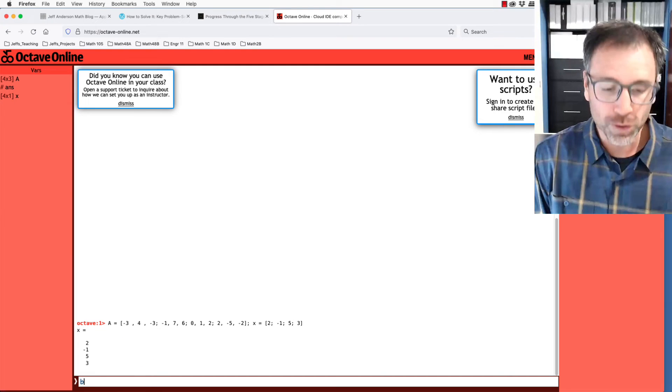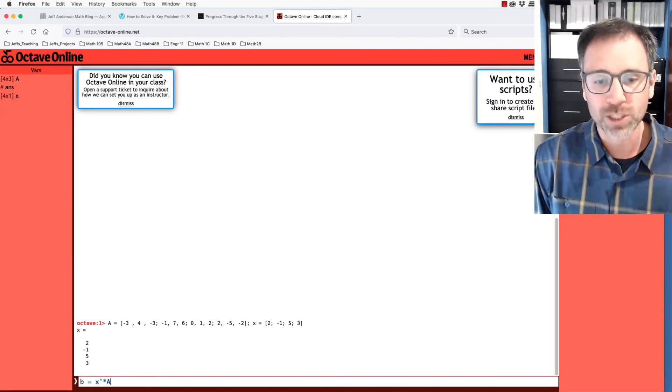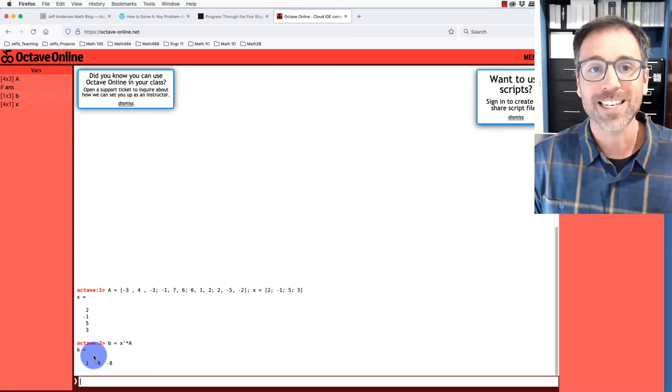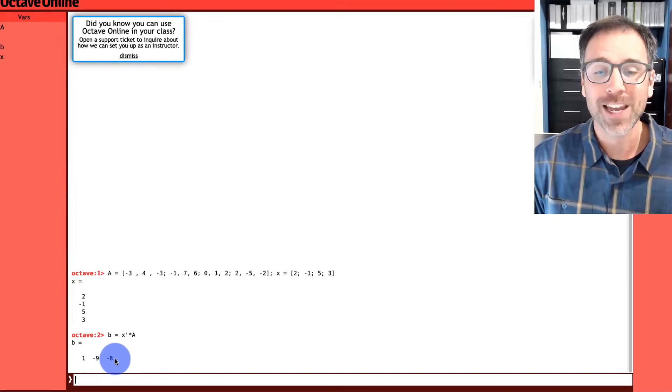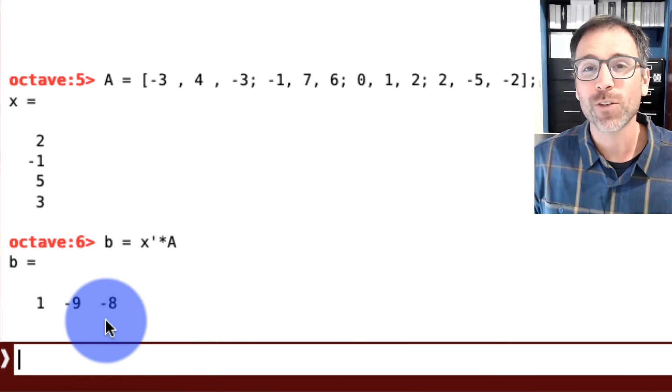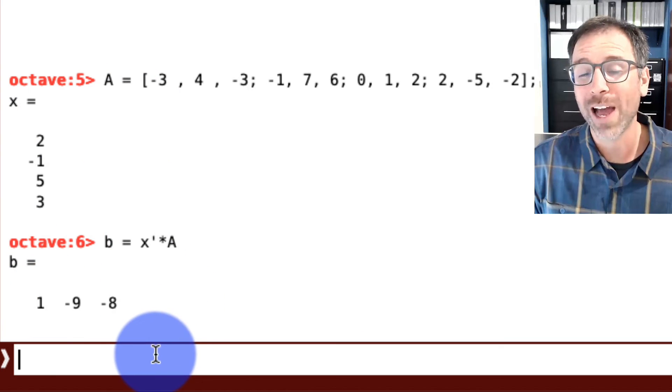Now I can do one of two things. I can set b equal to x transpose times A. Here I see that I get 1, negative 9, negative 8. I would claim that the output that we just generated was vector approach because we did it all at once.